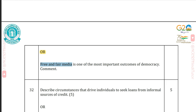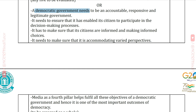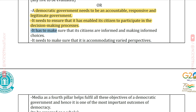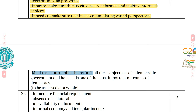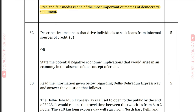Alternatively: Free and fair media is one of the most important outcomes of democracy — comment. Answer: A democratic government needs to be accountable, responsive and legitimate, enabling citizens to participate in decision-making, ensuring they are informed and making informed choices, and accommodating varied perspectives. Media as the fourth pillar helps fulfil all these objectives of a democratic government, and hence it is one of the most important outcomes of democracy.